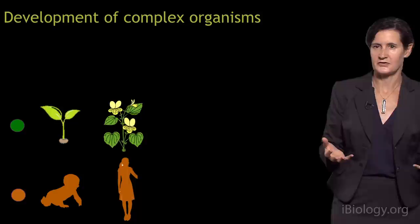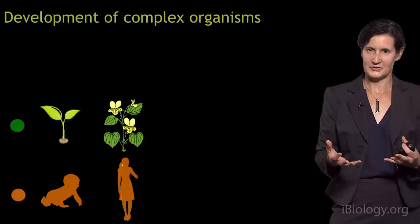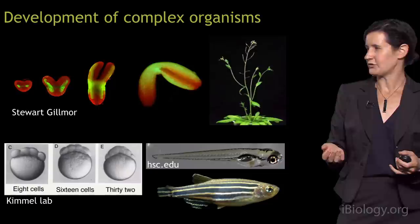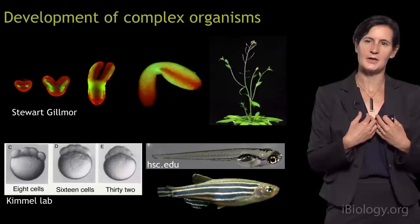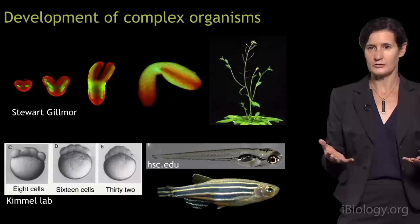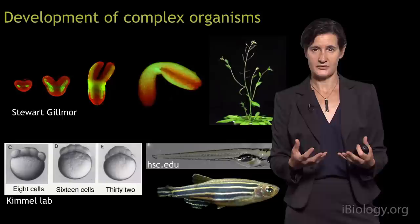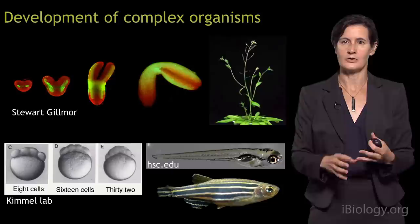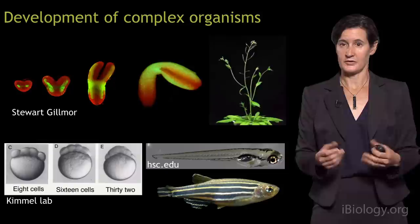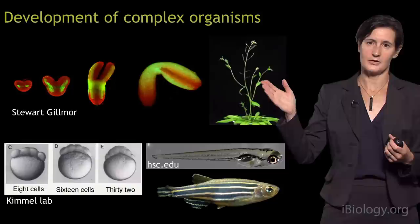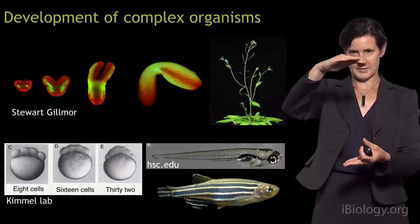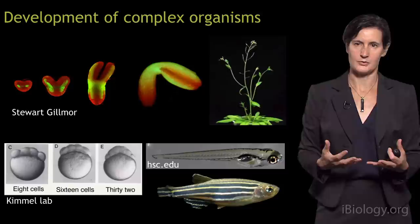Let's come back to development in plants and animals and look at some real examples. Often when we're interested in human health and disease we focus on humans, but we can't do all experiments on humans, so we use model organisms. Same with plants — wheat and corn are incredibly important as food stocks but they're difficult to work with: they're big, take a long time to grow, and have genetic difficulties. So often we use a model called Arabidopsis, a little plant related to broccoli that grows about this tall and has nice advantages for growing in the lab.